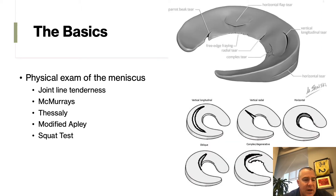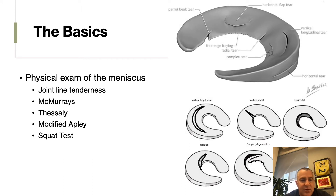For physical exam of the meniscus, there are a variety of different tests. The most important one is joint line tenderness — this is the most specific for meniscus tears. The Thessaly test is the most sensitive. I personally don't like McMurray's. The modified Apley and squat test, where you have a patient squat down, are great for posterior horn meniscus tears.